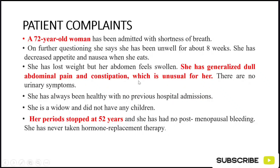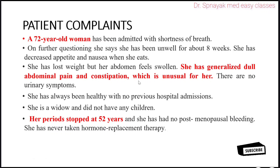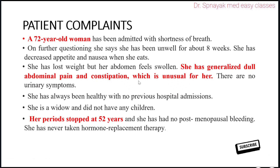A 72-year-old woman has been admitted with shortness of breath. On further questioning, she says she has been unwell for 8 weeks. She has decreased appetite and nausea when she eats. She has lost weight, but her abdomen feels swollen. She has generalized dull abdominal pain and constipation.